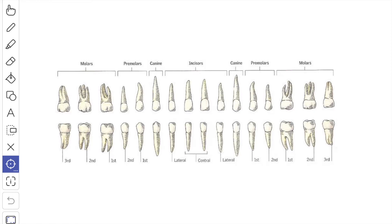Next we will see about the roots. The incisors, canine and premolars have a single root, though sometimes the first upper premolar has a double root. The lower molars have two roots — one proximal and one distal. The upper molars possess three roots: two small labial and one large lingual. The roots of the upper medial incisors are the broadest, those of the canines are the longest, and those of the molars are curved.